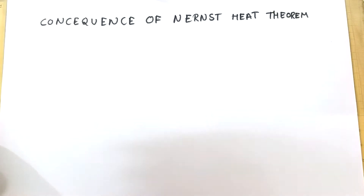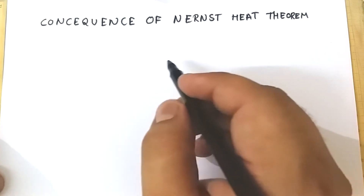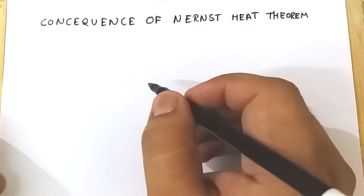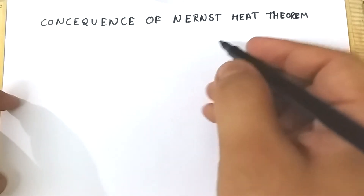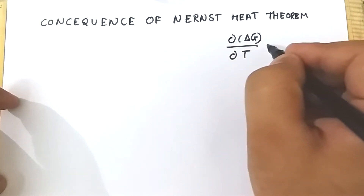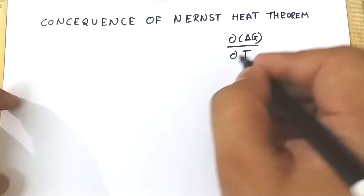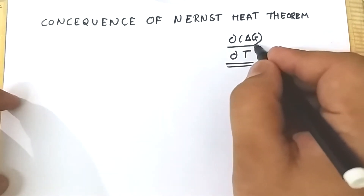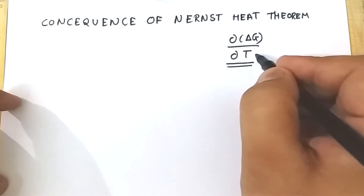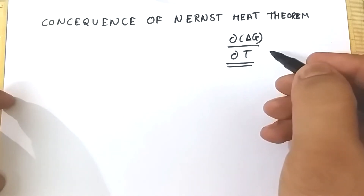Hi friends, welcome. Today we are going to discuss consequences of Nernst Heat Theorem. Before starting, we will revise what Nernst theorem is. Basically, Nernst theorem tells us that the value of d(ΔG)/dT approaches zero gradually as the temperature is lowered towards absolute zero. This change in free energy with respect to temperature approaches zero as temperature moves towards absolute zero.